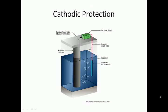Cathodic protection can be accomplished in several different ways. One way uses a protective electric current to complete the circuit, which protects the steel from electrochemical reactions that could cause corrosion. This system requires periodic inspection to determine the effectiveness of the corrosion protection.